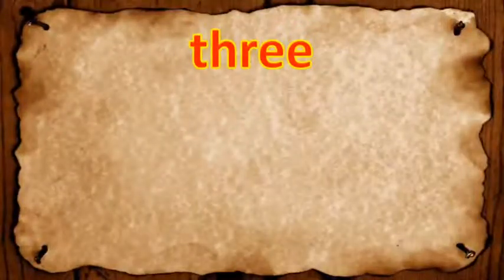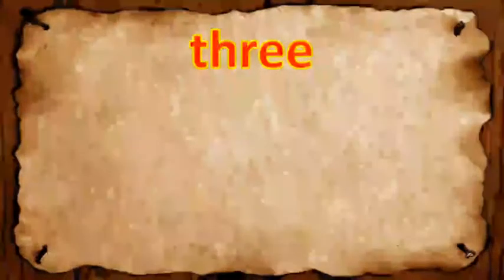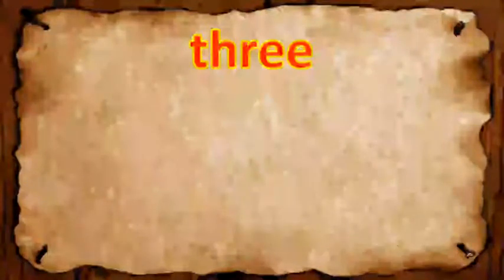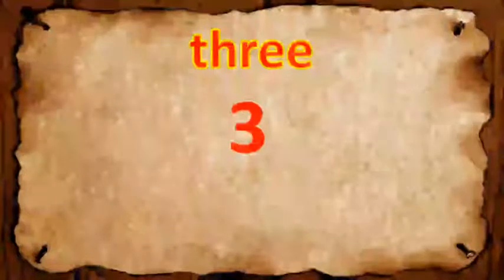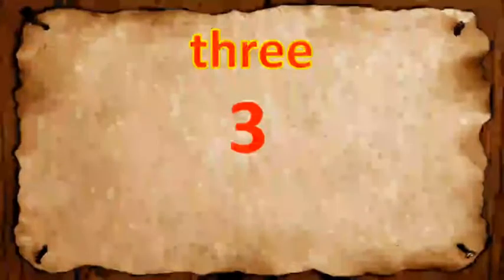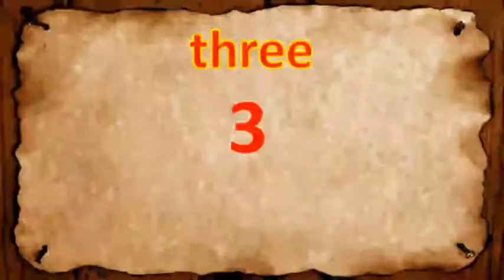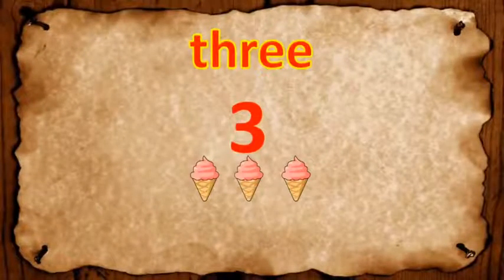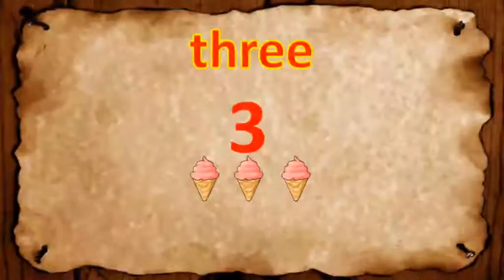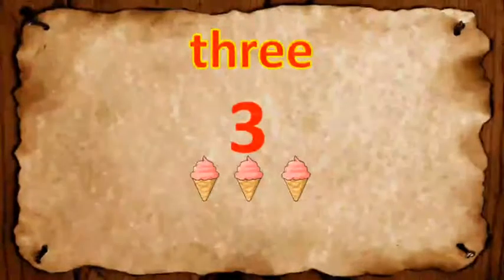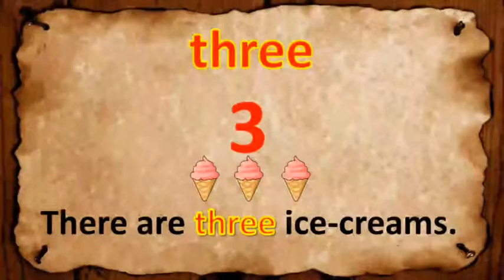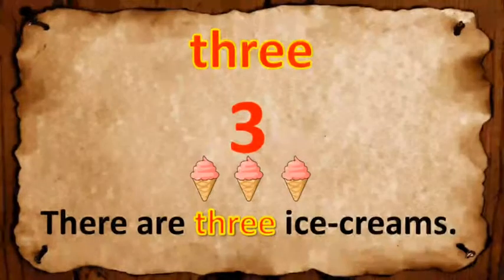The word is 'three'. Three is a number which comes after two and before four. Here we can see three ice creams. The word is used in a sentence: There are three ice creams.